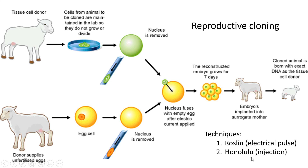There are two techniques used in reproductive cloning. The Roslin technique uses an electrical pulse — the donor DNA inside the egg cell is literally given an electrical shock so that the nucleus fuses with the egg cell. The Honolulu technique, instead of using electrical pulses, uses an injection needle to literally inject the donor nucleus directly into the egg cell. In both cases, this fertilized egg cell is then placed into the uterus of the surrogate mother, who carries the baby until it is born.